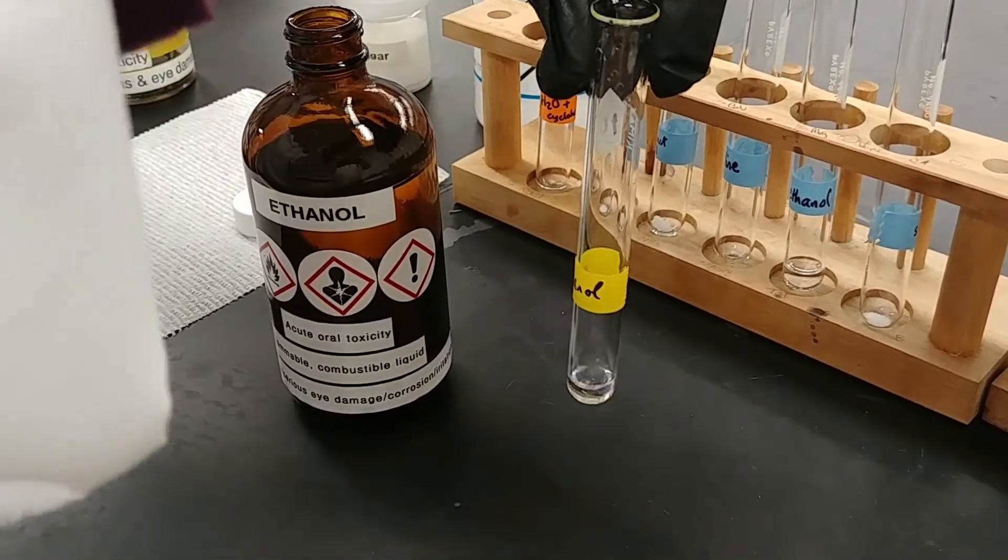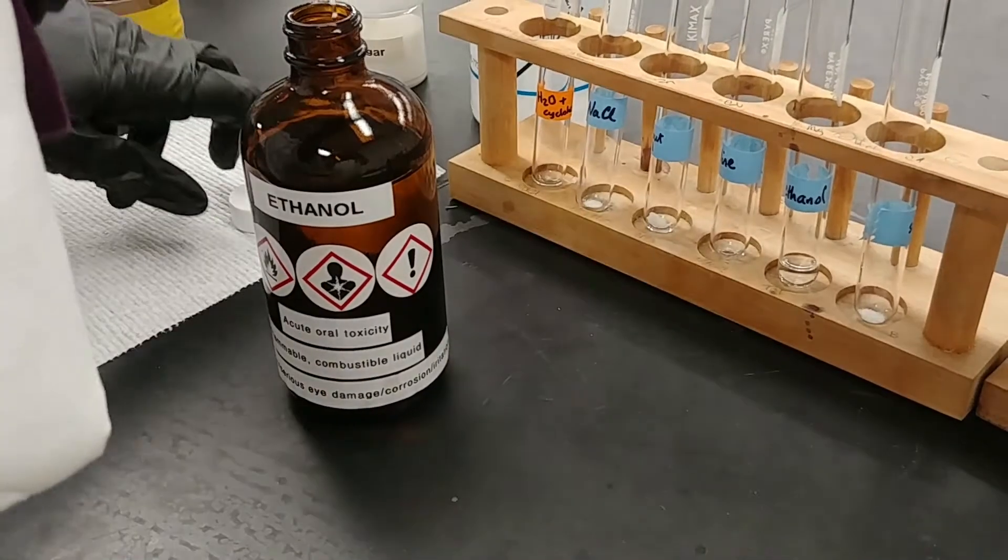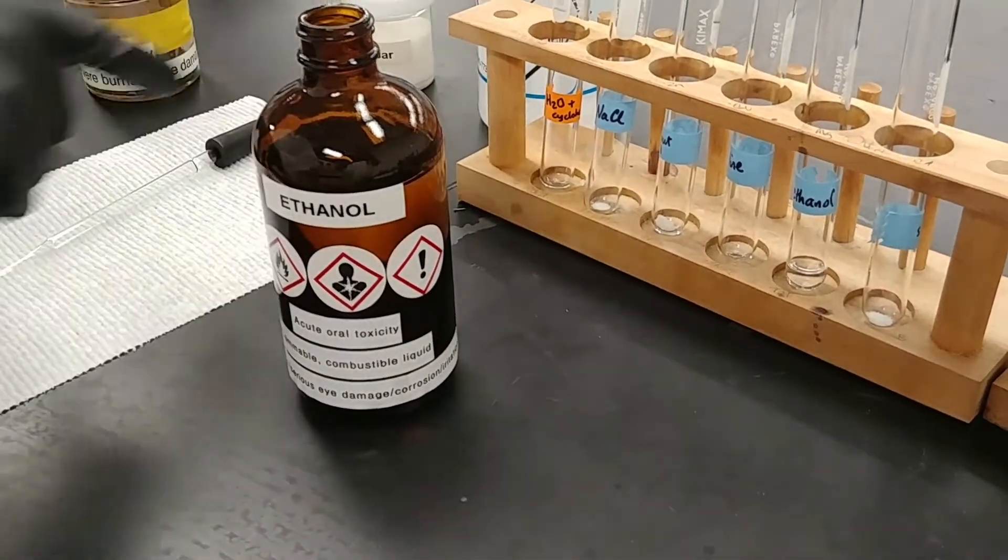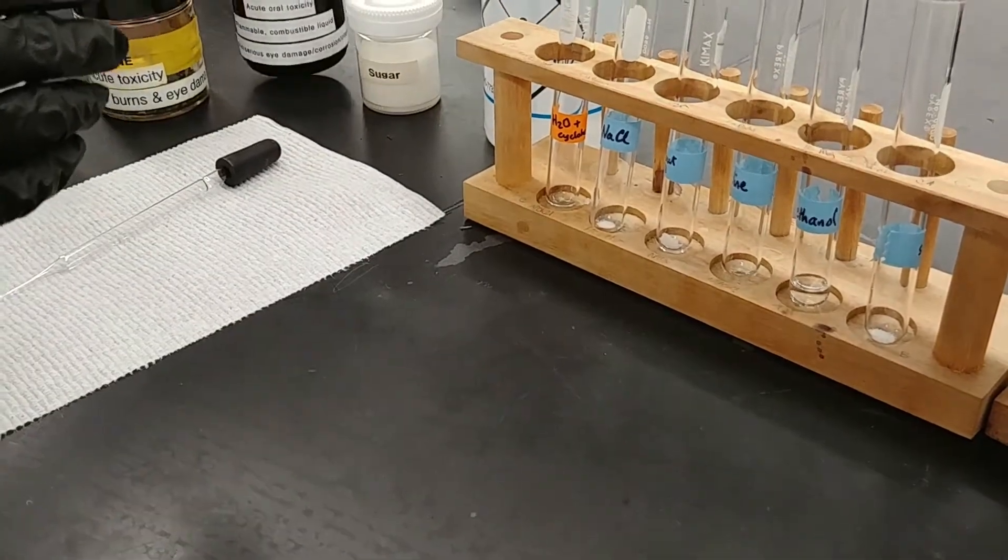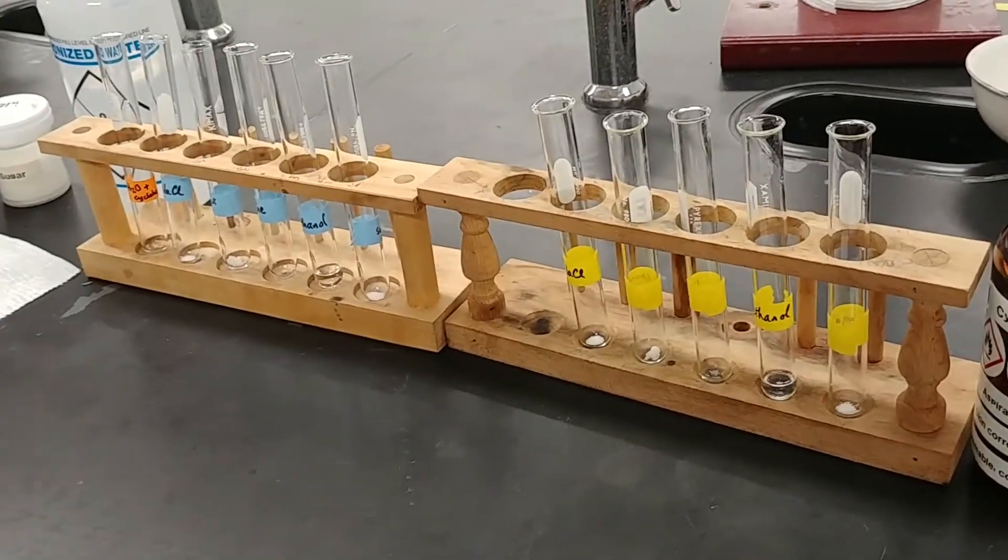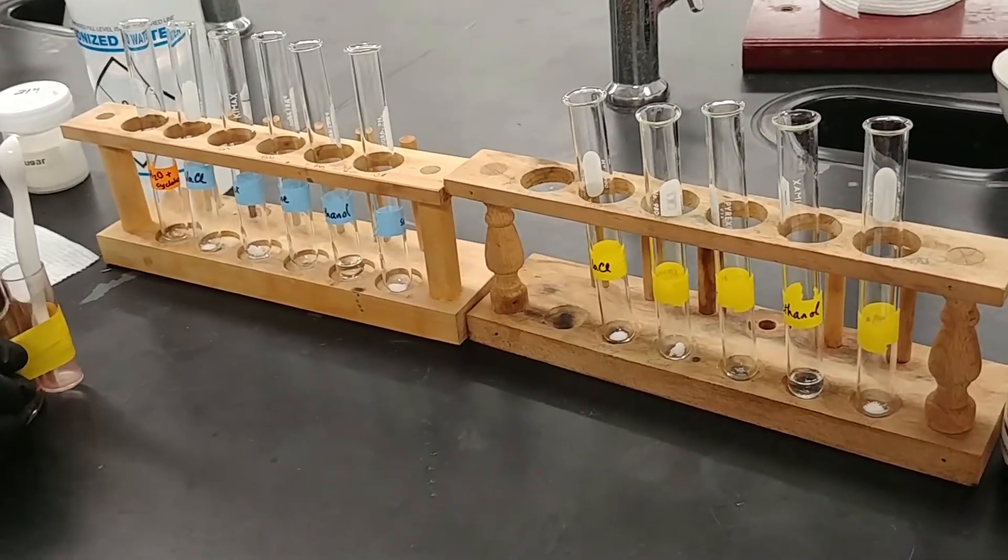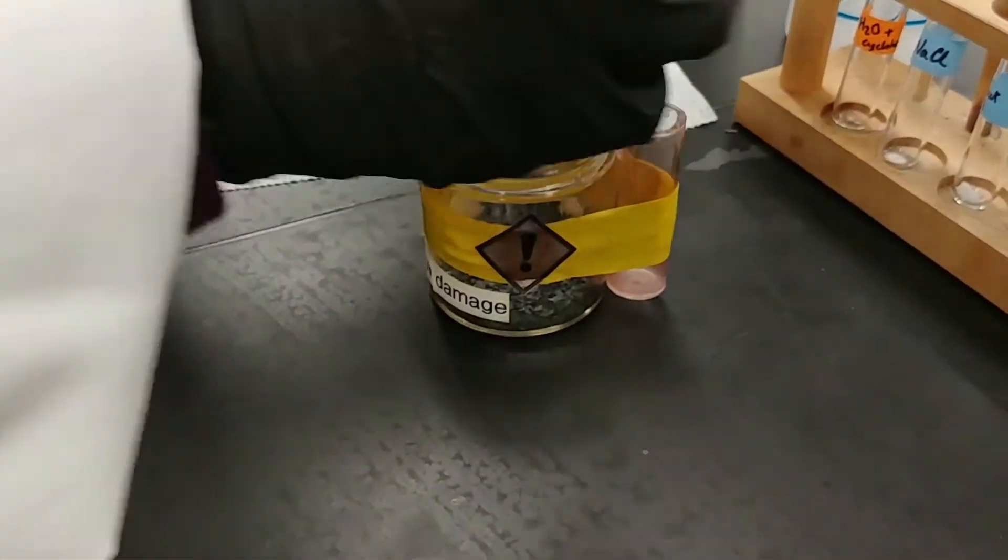Now if we have a liquid dissolving in another liquid, it's a slightly different situation than when we have a solid dissolving in a liquid. With a liquid we can either have something miscible or immiscible. Miscible liquids are going to be able to dissolve in each other in any proportion, so we don't have to worry too much about a saturation point here.